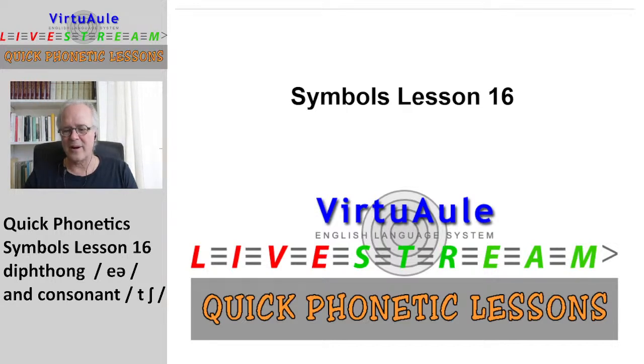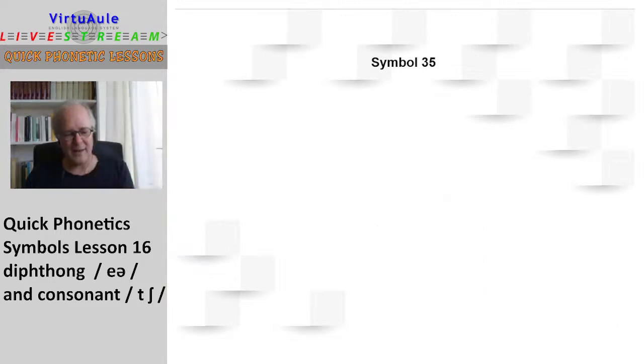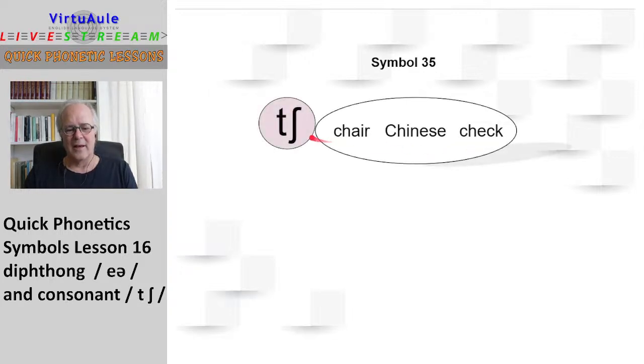So let's get started right away with the presentation and we'll look at this first symbol, which is the consonant T, which is also a sound. It's similar to the sound, but then we have the long S sound, which is like the SH. So this symbol represents the sound in the words chair, Chinese, and check. Let's look at some other words.